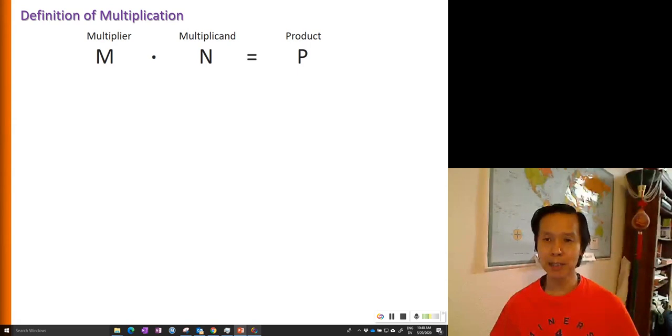We can see multiplication as a product of two factors. One of the factors is called multiplier, which refers to the number of groups. And the other factor is multiplicand, which refers to the number of units in each group. And the product is just M times N, which refers to the total number of units in all the M groups.